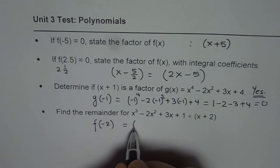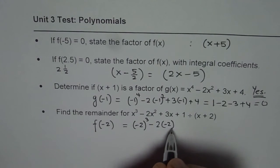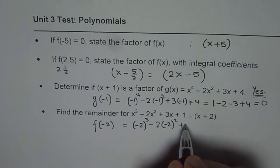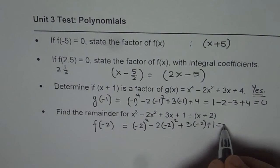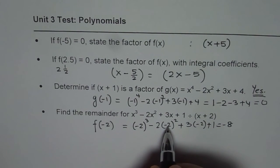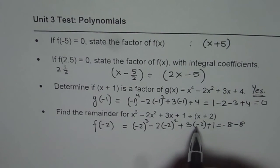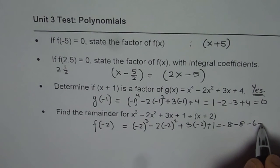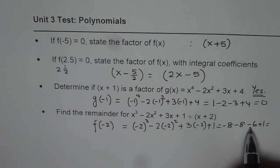So just put minus 2 for x and calculate. You can use a calculator to calculate all these questions. So (-2)^3 is -8. (-2)^2 is 4, times -2 is -8. 3 times -2 is -6, plus 1. So -8 - 8 is -16, and -16 - 6 is -22 plus 1 is -21. So that is our answer.